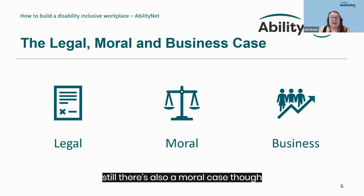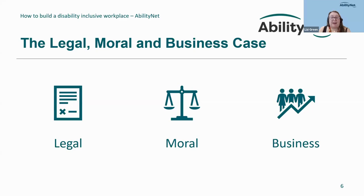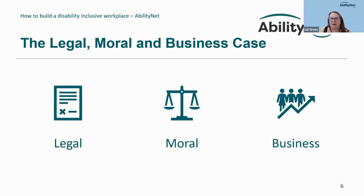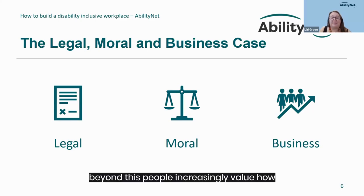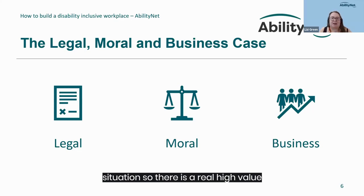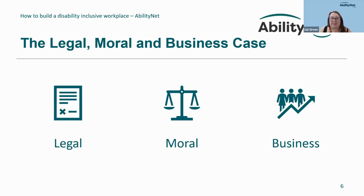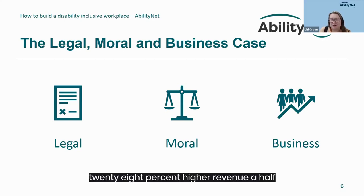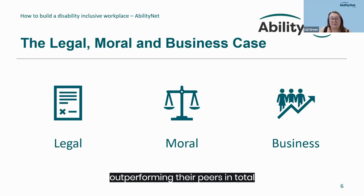There is also a moral case: quite simply it's the right thing to do. 80% of disabled people — and disability is described as an open club that anybody can join — so you want your workplace to be ready to provide necessary support. People increasingly value how others are treated and represented in their company regardless of their own situation, so there is a real high value attached to that inclusive culture. And lastly there's a strong business case: a study by Accenture found that organisations prioritising disability inclusion had on average 28% higher revenue, 100% higher net income, 30% higher economic profit margins, and a 200% increased likelihood of outperforming their peers in total shareholder returns.